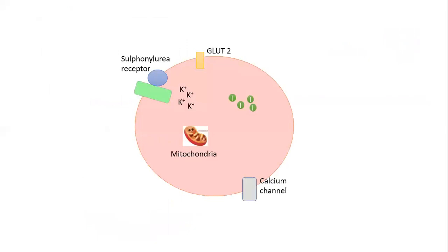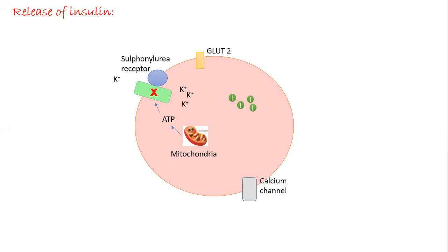Now we'll see how insulin is released. Once insulin is produced, it is stored in the beta cell. In normal conditions, the polarity of the cell is maintained by expulsion of K+ ions from the cell. When the body senses glucose, this glucose is taken up by a glucose transporter known as GLUT2, which is independent of insulin. Once GLUT2 senses elevated glucose, glucose is taken inside the cell and utilized by the mitochondria for production of ATP.